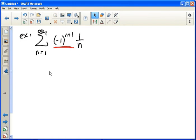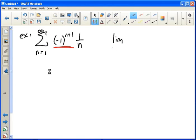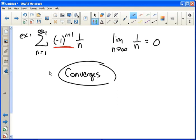So to test if it converges or not, simply ignore the negative one to the n plus one and take the limit of what's left over. Well if you take the limit of this as n goes to infinity, the denominator gets huge while the top stays the same. So the limit is in fact zero and we can say that this converges. Just ignore the negative one part, take the limit of what's left. If you get zero it converges. Not zero, diverges.